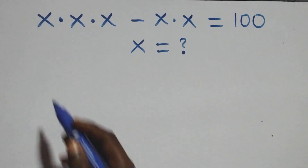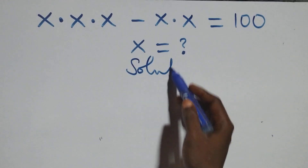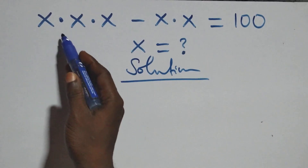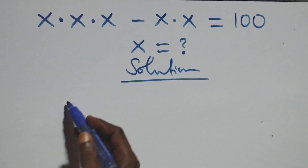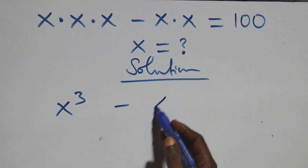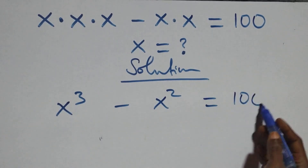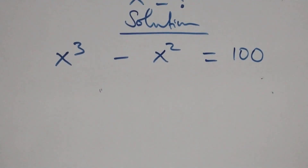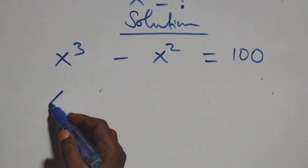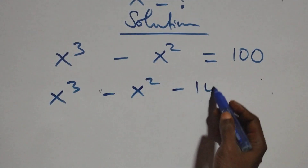Hello, you're welcome. Here we solve a nice algebraic equation. What we have here, we can multiply directly: x times x, which is the same as x squared equals 150. The next step, we take 150 to the left-hand side, and this becomes x cubed minus x squared minus 150 equals zero.